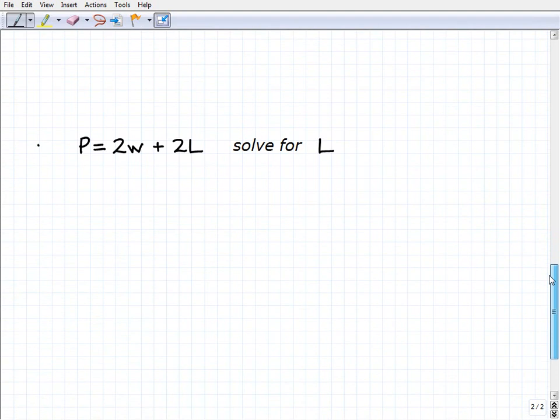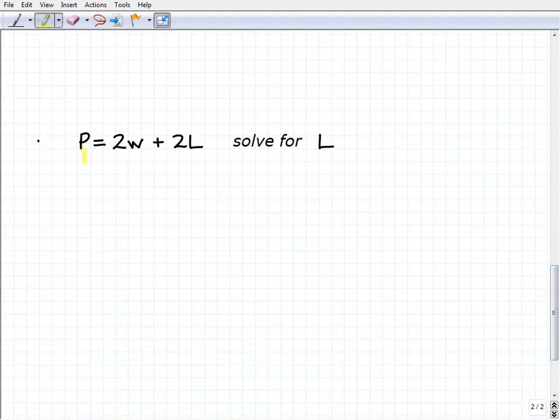Let's take a look at our final problem. Here we have P equals 2W plus 2L. This is the perimeter formula. Perimeter equals twice the width plus twice the length. So this time I want to solve for L. So how do I do this one?